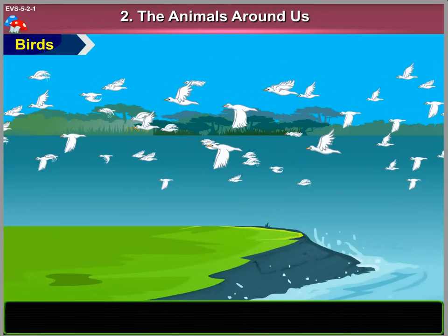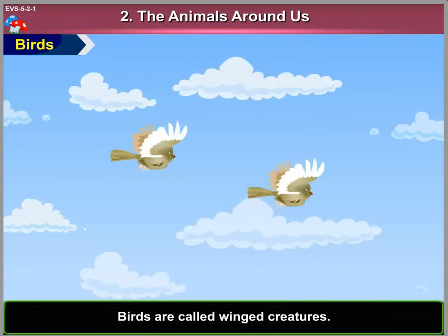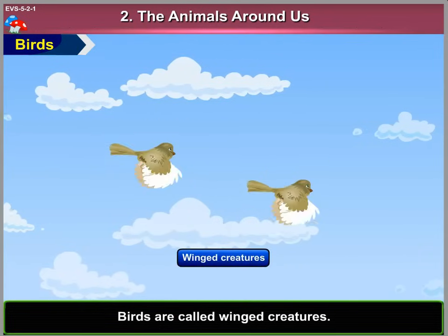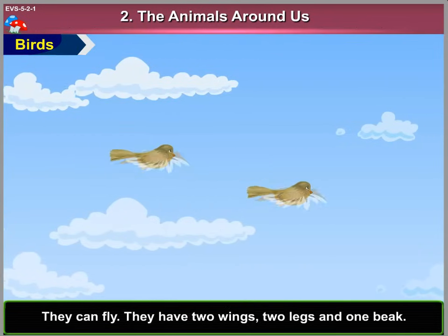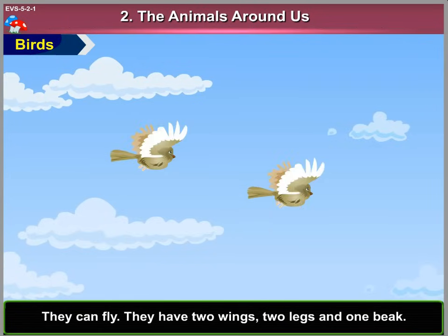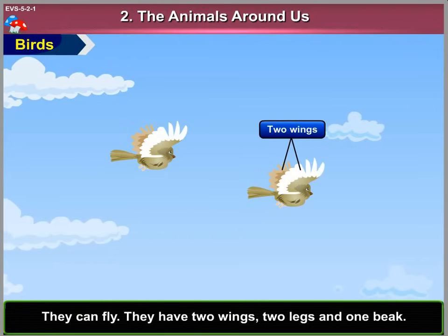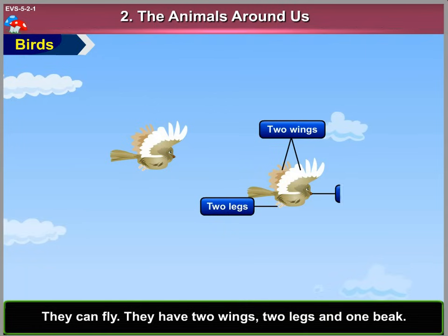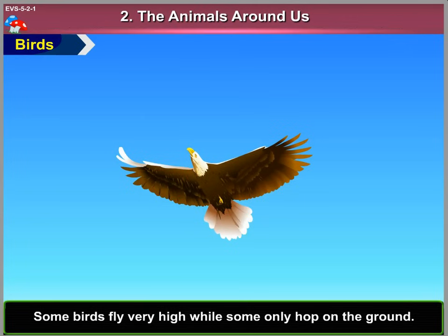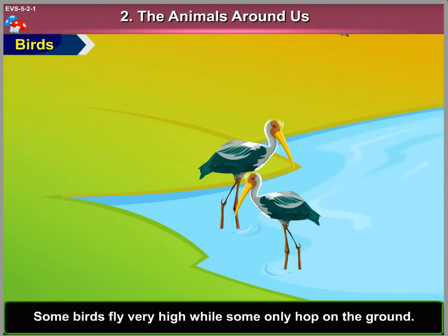2. Birds. Birds are called winged creatures. They can fly. They have two wings, two legs and one beak. Some birds fly very high, while some only hop on the ground.